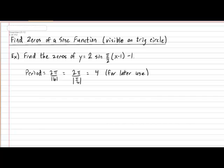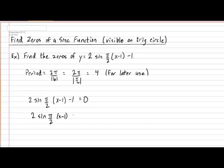Let's begin to calculate the zero by doing what we do with every other function: setting the value of y to 0. Next, we want to isolate the actual sine expression itself, which means we need to move over the negative 1 and the coefficient 2. Let's begin by moving the negative 1 to the other side of the equal sign. That will give us 2 sine of pi over 2 times x minus 1 equal to positive 1. And next, let's move the coefficient of 2 to the other side, giving us sine of pi over 2 times x minus 1 equal to 1 over 2.